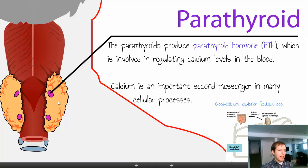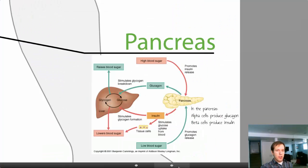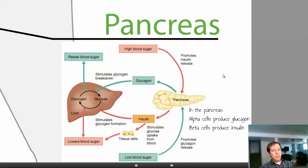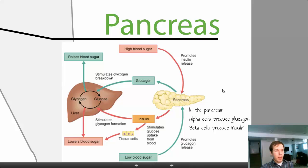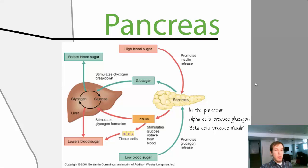The parathyroid, right next door to the thyroid, is involved in calcium regulation. Moving forward to the pancreas — the biggest gland in the body — which pumps out hormones in addition to the digestive enzymes it also makes. In the pancreas, alpha cells and beta cells are significant for the regulation of blood sugar.